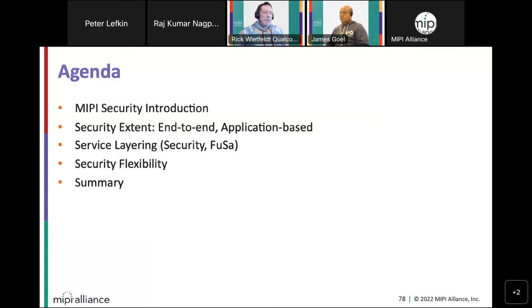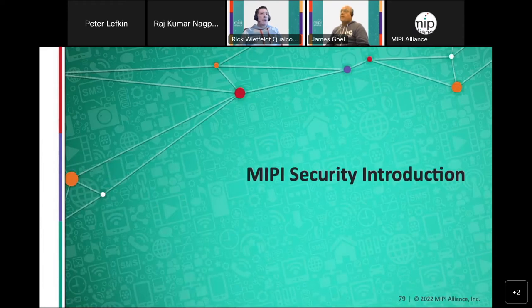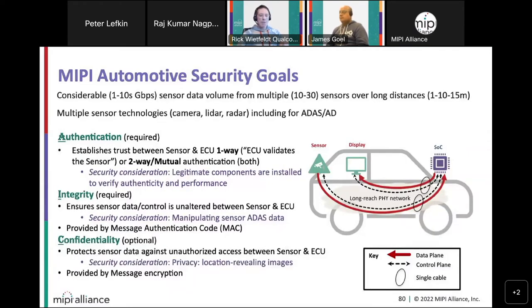The agenda covers a high-level summary of what MIPI security aims to accomplish. Topics include the security extent — distinguishing between end-to-end and application-based security — how security and functional safety are integrated within the framework, security flexibility with its many configurable controls, and a closing summary.